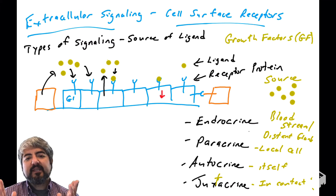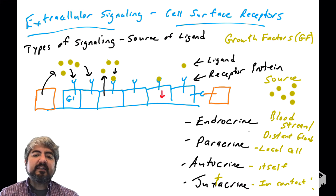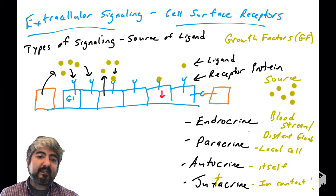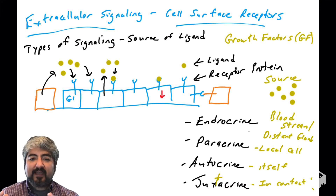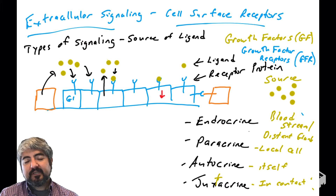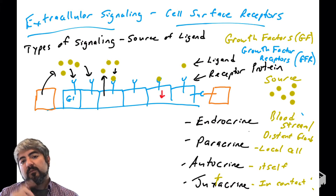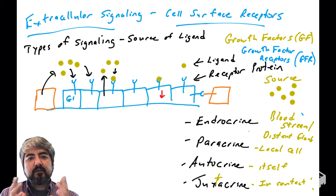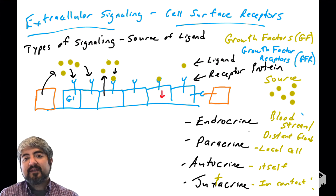All sorts of molecules can be signaling molecules — hormones, neurotransmitters. In cancer biology, we talk a lot about signaling molecules called growth factors, because growth factors are what tend to trigger cells to go through the cell cycle and make more cells. So we're going to talk about growth factors and the proteins that they bind on the surface of cells, called growth factor receptors. We're going to see that they're defective in many human cancer cells, which allows those cells to grow uncontrollably.